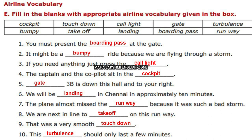If you need anything, just press the call light — if we are in need during our journey on planes, we can use the call light. The captain and co-pilot sit in a cockpit — the pilots sit in a place called the cockpit. Gate 3B is down this hall and to your right — for every gate there is a number in airports, so 3B indicates the gate.